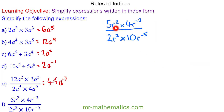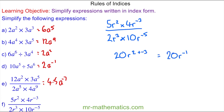We'll evaluate the numerator first — 5 times 4 which is 20 — and we'll use the multiplication rule where we have 20r to the power of 2 add the negative 3. When we add this negative it becomes a subtraction, so we have 20r to the power of negative 1. For the denominator, 2 times 10 which is again 20, and r to the power of 3 add the negative 5, which simplifies to 20r to the power of negative 2.